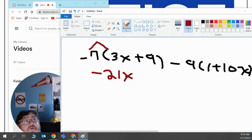Then I'm going to multiply negative 7 times 9. Negative 7 times 9, again a negative times a positive is a negative. Negative 7 times 9 is negative 63.